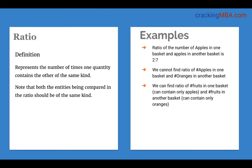Ratio represents the number of times one quantity contains the other of the same kind. So if we have two entities that are similar, we can find the ratio of both those entities. For example, the number of apples in one basket compared to apples in another basket is a ratio of 2 to 7. But we cannot say the ratio of the number of apples in one basket and the number of oranges in another basket, because they are not similar entities.